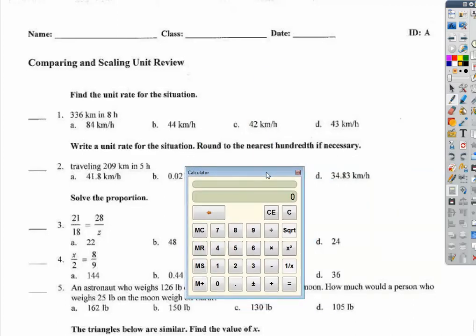So, find the nearest unit rate from the situation. We have 336 kilometers in 8 hours and we have kilometers per hour. The nice thing about these unit rate tests is that the units will tell you what to do. What's another word for per? Divide. So they're asking you to divide 336 by 8 and you get 42. Simple.